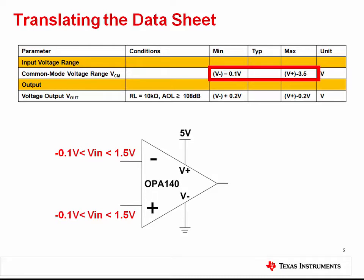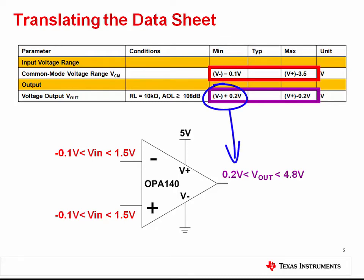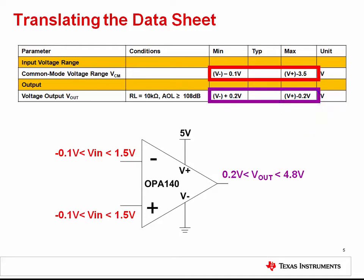The output swing is given here, and it's the same type of definition which is relative to the supply voltages. The minimum output voltage is V minus plus 0.2 volts, or 0.2 volts in this case, and the maximum output voltage is V plus minus 0.2 volts, or 4.8 volts. Driving the output below 0.2 volts or above 4.8 volts will cause the output to be non-linear.